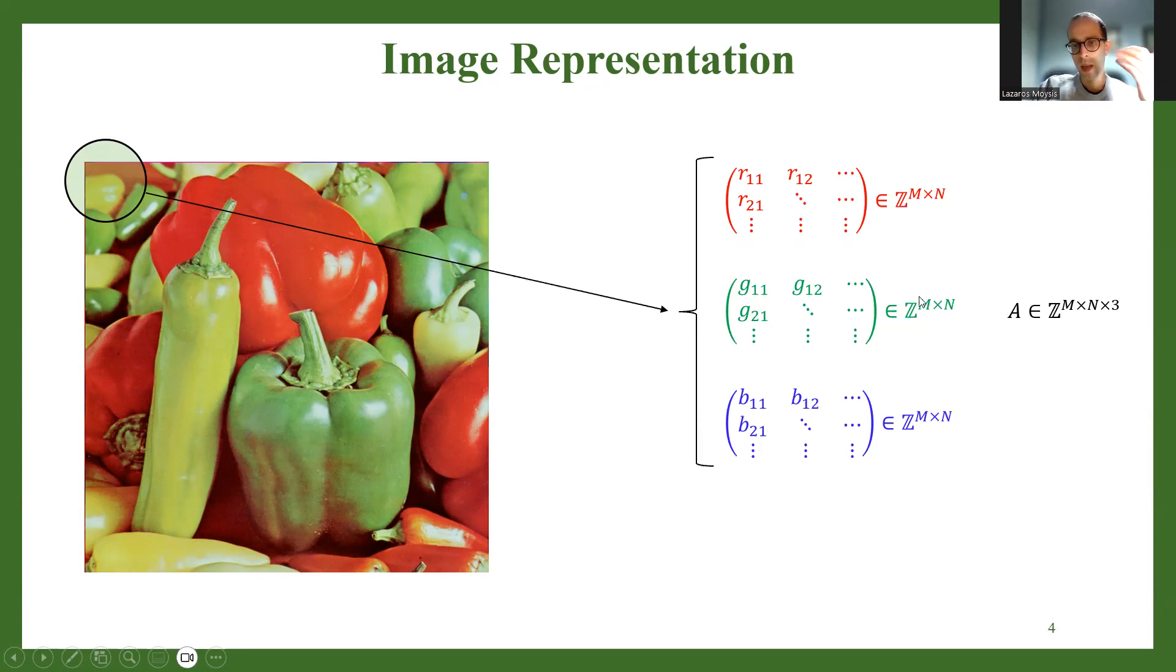And we actually here have three different matrices, one matrix that represents the shades in the red intensity, one matrix that represents the shades in the green intensity, and one matrix that represents the shades in the blue intensity. So each individual pixel actually has three values, the value of the red intensity, the green intensity, and the blue intensity.